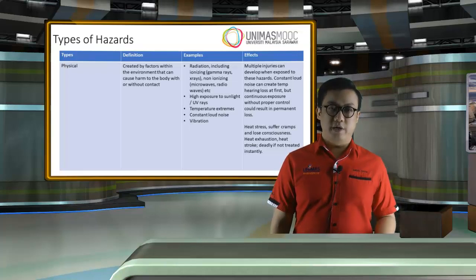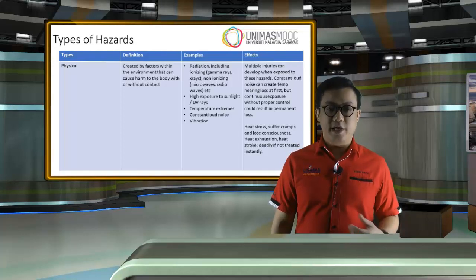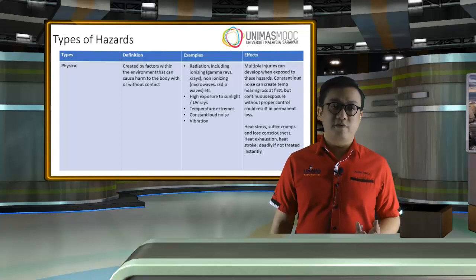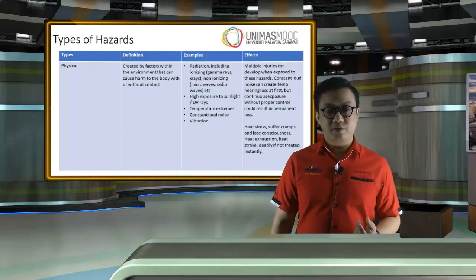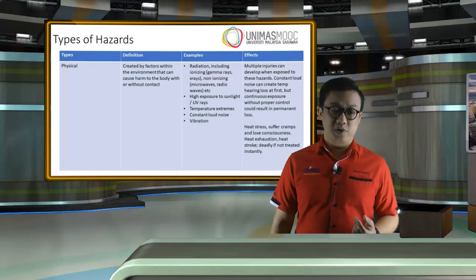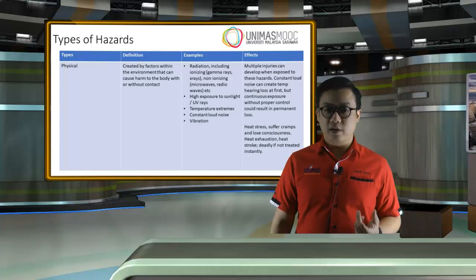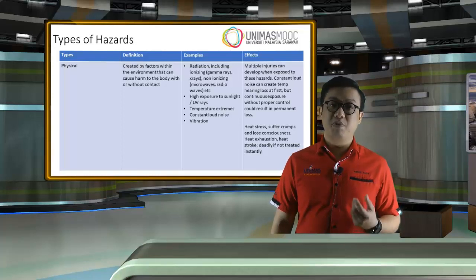There are many types of hazards out there. We have physical hazards, which are created by factors within the environment that can cause harm to the body with or without contact. Examples include radiation — ionizing and non-ionizing waves such as gamma rays, x-rays, microwaves, and so on — high exposure to sunlight or UV rays, temperature extremes, constant loud noise, and vibration. Constant loud noise can create temporary hearing loss at first, but continuous exposure without proper control could result in permanent hearing loss.